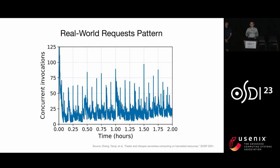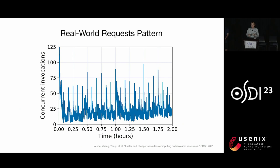In the real world, requests to a specific model often come in bursts. For example, one day a specific filter on a camera app went viral, and then the number of requests to that filter's neural network will suddenly get very high. On the slides, we show a real-world request pattern, and we can see that the spikes are all indicating request bursts.